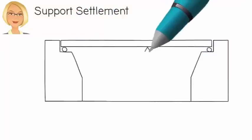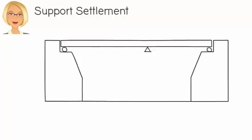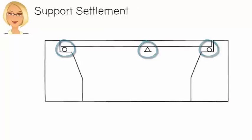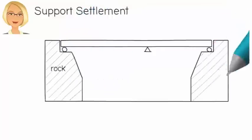Suppose we have a continuous beam acting as a bridge structure. The beam has three supports, two rollers and a pin. The left roller rests on solid rock. So does the right roller.